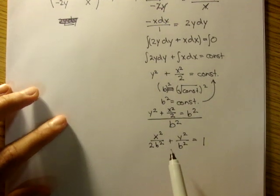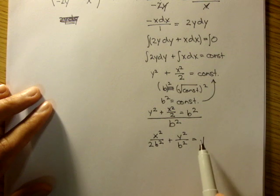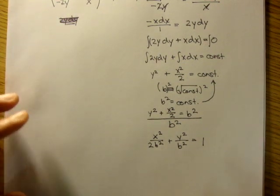You can kind of see, this is kind of looking like the equation of an ellipse. x squared over some term plus y squared over some term is equal to 1. And so let's keep going.